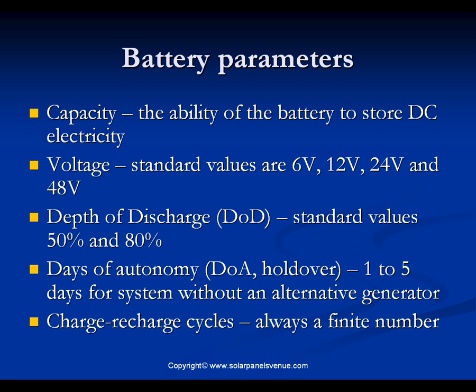In a solar system, the battery bank is recharged by the solar array. Batteries used in solar systems are rechargeable. Every battery has its life duration, which means that it cannot be discharged and recharged for a limitless number of times. Another important battery parameter is depth of discharge — it is the degree down to which the capacity of a battery can be reduced.